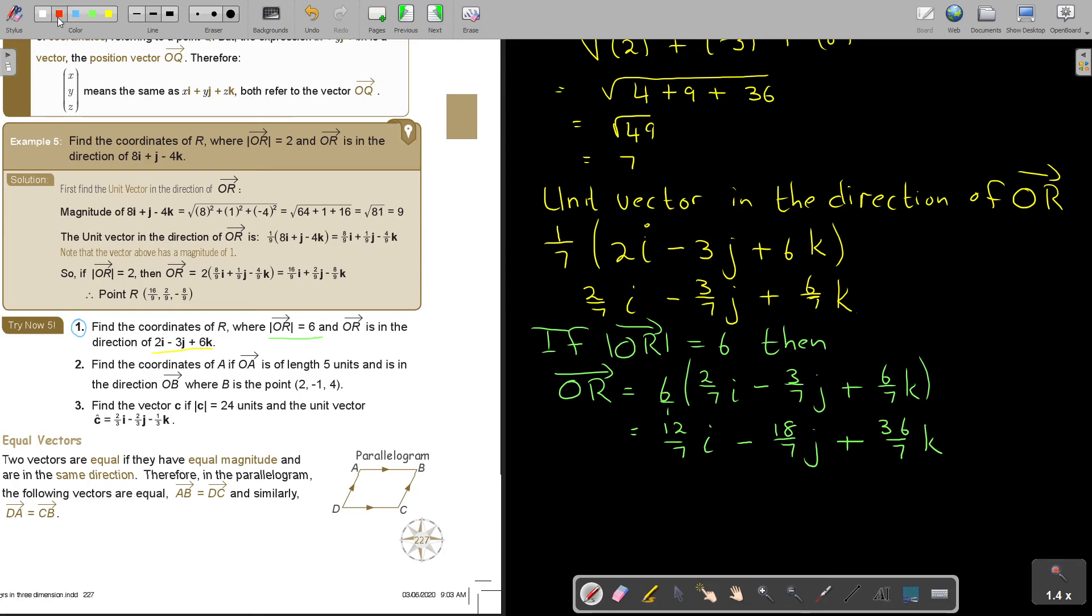So therefore, I'm basically just taking the front values. So it's 12 over 7 comma negative 18 over 7 comma 36 over 7, and that is going to be point R.